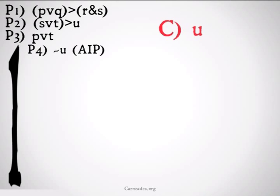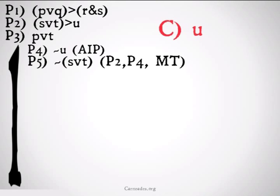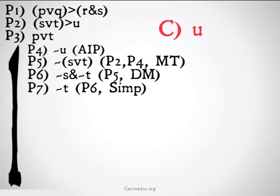So, we'll start with denying U, assumed indirect proof, and we'll draw a line going down. Not U is going to allow us to use modus tolens on premise 2, which will get us, it's not the case that S or T, to form modus tolens. Whenever you see a negation outside of a pair of parentheses with a disjunction or a conjunction inside, you should think DeMorgan's rule. That's what we'll use to get not S and not T, 5 DeMorgan's. We'll then simplify that down to not T, and then use disjunctive syllogism on 3 and 7 to get P.